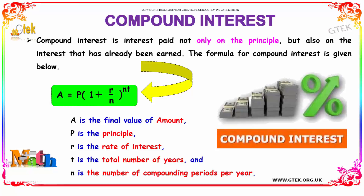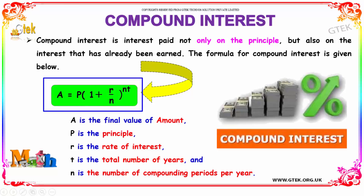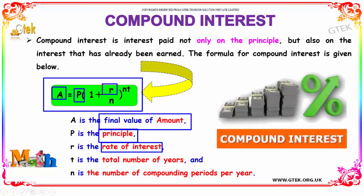The compound interest is the interest paid not only on the principal but also on the interest that has already been earned. The formula for compound interest is A = P into (1 + r/n) whole power n into t, where A is the final value of the amount, P is the principal, r is the rate of interest, t is the total number of years, and n is the number of compounding periods per year.